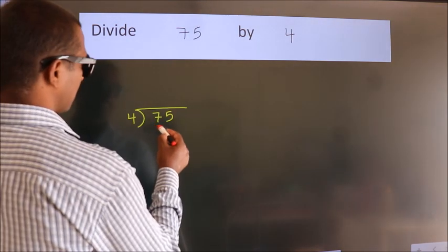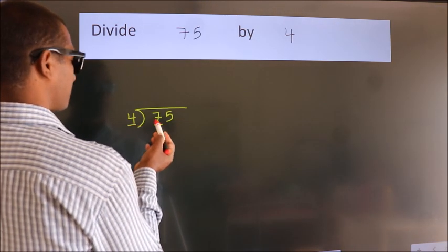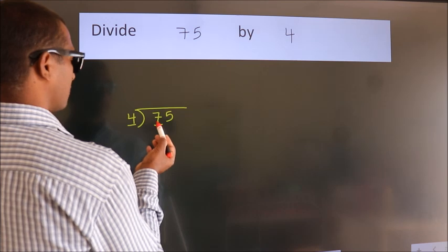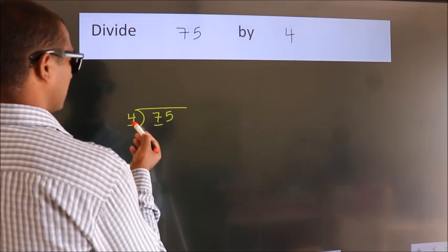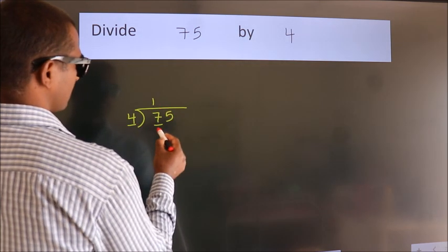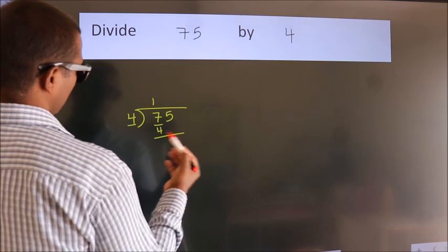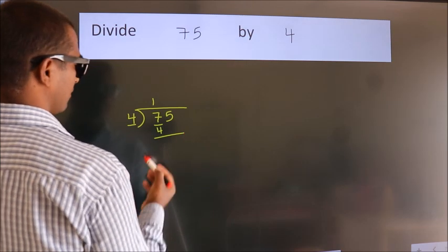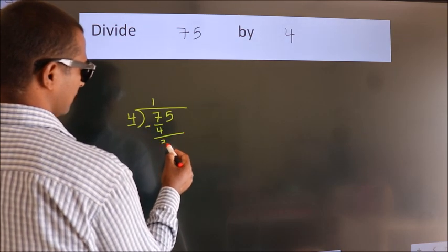Here we have 7, here 4. A number close to 7 in the 4 table is 4 once 4. Now we should subtract. We get 3.